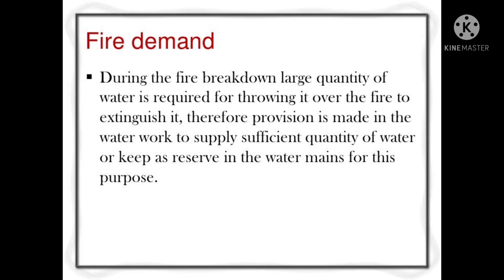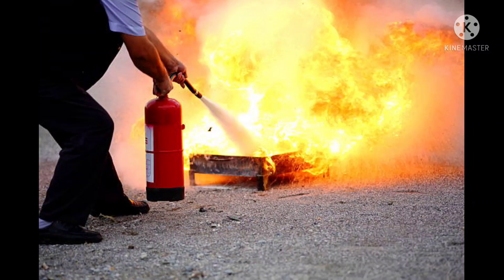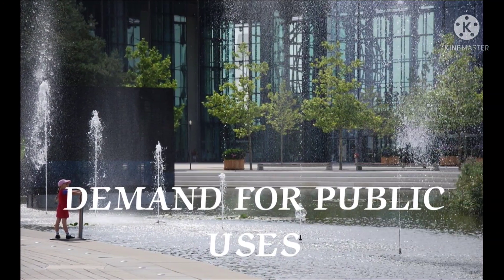In every society, fire brigades and firefighting squads are deployed in every city or municipality. Special water mains and fire hydrants are installed to control fire outbreaks, and generally five to ten percent of the main water supply is reserved for this purpose. The quantity of firefighting water is calculated using empirical formulas such as the National Board of Fire Underwriters formula, Kuichling's formula, Freeman's formula, and Freeman's formula. In India, Kuichling's formula is most commonly adopted.